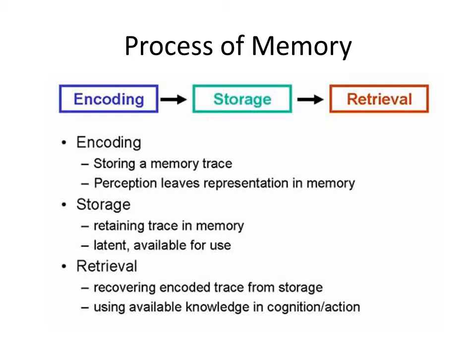The process of memory refers to encoding, storage, and retrieval. Memory encoding refers to when information comes into our memory system from sensory input — it needs to be changed into a form that the system can cope with so that it can be stored. There are three main ways information can be encoded: visual, acoustic, and semantic. Visual refers to pictures, acoustic refers to sounds, and semantic refers to meanings. For example, how do you remember a telephone number from the phone book? If you can see it, you are using visual coding; if you are repeating it, you are using acoustic coding — that is, sound.